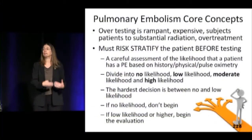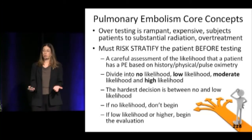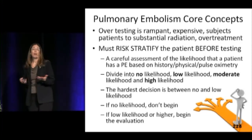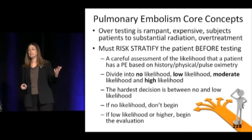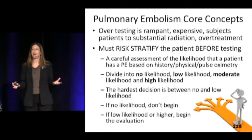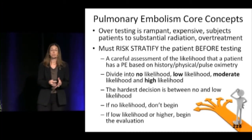So a couple of things about the approach to pulmonary embolism. Knowing that you're going to miss one or two or ten — it's just a tough bugger, pulmonary embolism — you need to have a systematic, reproducible, medico-legally and medically justifiable practice when you approach somebody who might have a pulmonary embolism. Every time that diagnosis crosses your mind, do a risk stratification first. If appropriate, then do a D-dimer. If it's not appropriate, then don't — because of your risk stratification.